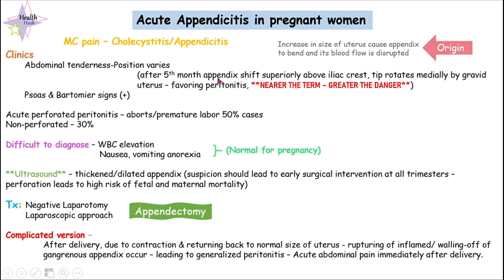After the fifth month, the appendix tip is also rotating medially because of the increasing gravid uterus size. This condition where the appendix shifts superiorly and turns medially means that if the patient has appendicitis, it is a very favorable condition for peritonitis to occur.